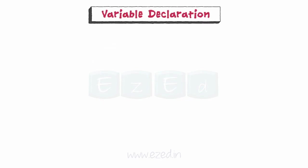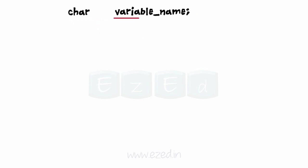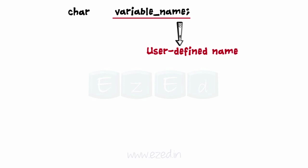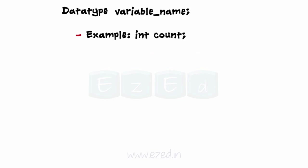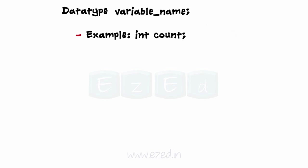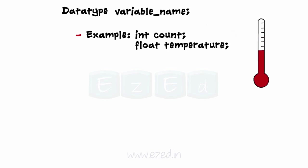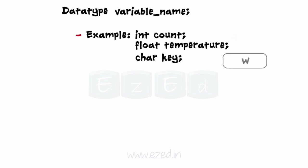To declare a variable, the data type indicates the type that the variable belongs to — it can be integer, floating point, character, and so on. The variable name can be any user-defined name given as per the rules of identifier naming conventions. Examples are: int count, where count could store the count of numbers; float temperature, where temperature could store the room temperature; and char key, where key could store a character.